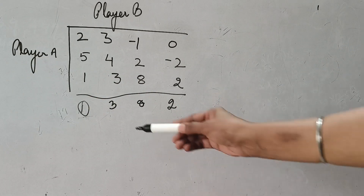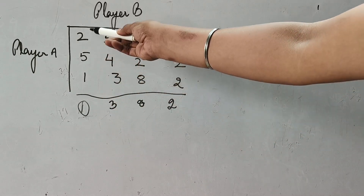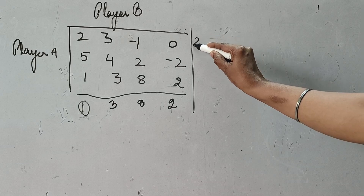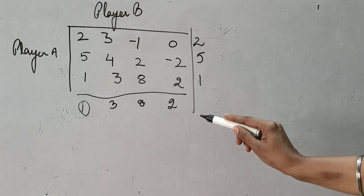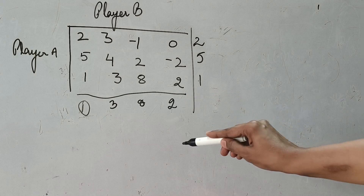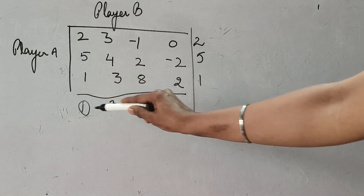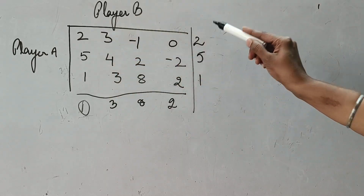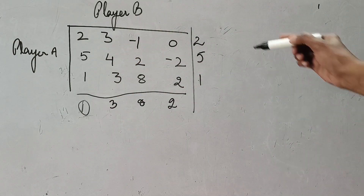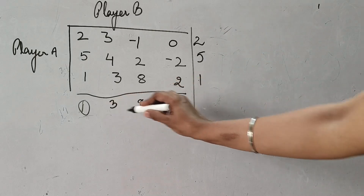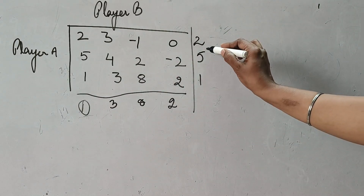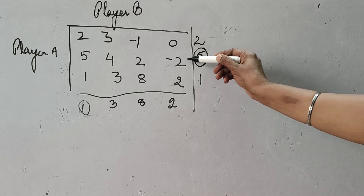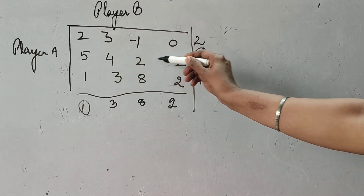Now note which column this circle has been put in, and take that column out. The rule is: row-wise minimum, column-wise maximum. So out of this column, take the maximum number and circle it. The maximum number corresponds to row 5, 4, 2, minus 2. Earlier we took the first row out; now instead of taking this row out, we will add these elements to the row already taken out.